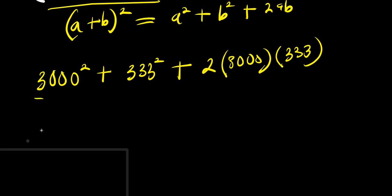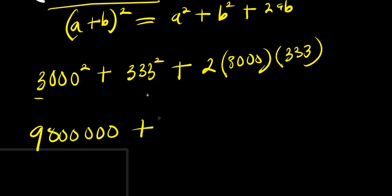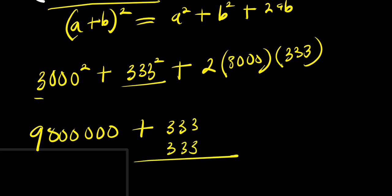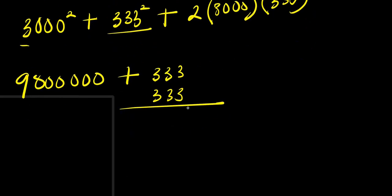3000 squared is 9 million, and 1000 squared is 1 million. Then 333 squared: three times three is nine, and we need to multiply 333 times 333.